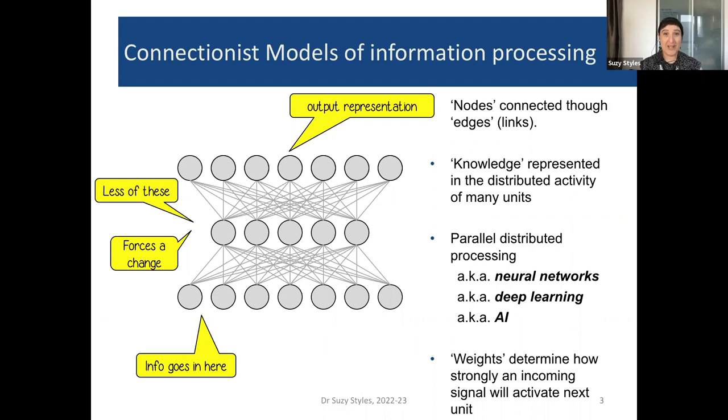In a Connectionist network, we have different information processing units known as nodes. A node is simply that processing unit that occurs when two connections join. Those connections are sometimes known as links or edges in the network. Knowledge can be represented as a distributed activity throughout the network, so there might be many units active at the same time that together form a stable representation of something. Another property of a network like this is its parallel distributed processing. That means many units can be active in parallel at the same time, and the activation state can be distributed throughout the network with multiple processing units active simultaneously.